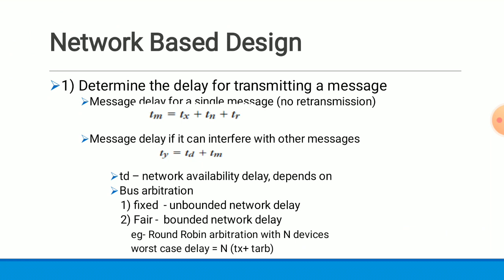There are mainly two bus arbitration techniques. The first is fixed bus arbitration and the second is fair bus arbitration. In fixed bus arbitration, the network delay is unbounded for all but the highest priority device — meaning the highest priority node always gets the bus or channel to transfer the message first.